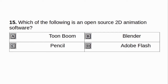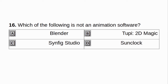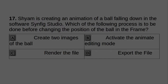Which of the following is an open source 2D animation software? A. Toon Boom. B. Blender. C. Pencil. D. Adobe Flash. Answer: C. Pencil. Which of the following is not an animation software? A. Blender. B. 2P2D Magic. C. Synfig Studio. D. Sun Clock. Answer: D. Sun Clock.